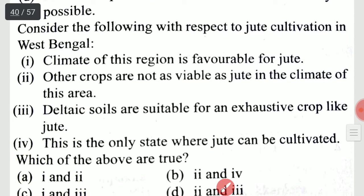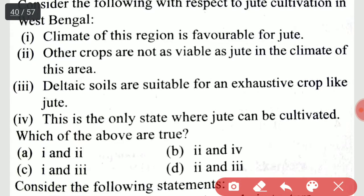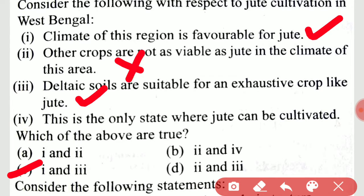Consider the following with respect to jute cultivation in West Bengal. Number 1: climate of the region is favorable for jute. Number 2: other crops are not as viable as jute in this climate. Number 3: deltaic soils are suitable for an exhaustive crop like jute. Number 4: this is the only state where jute can be cultivated. Which are true? Answer is 1 and 3 only — 2 and 4 are not true.